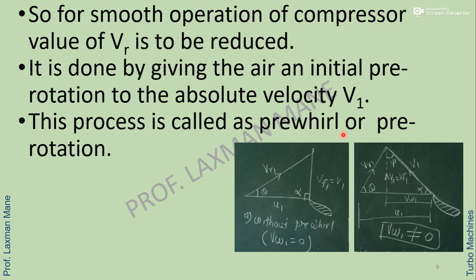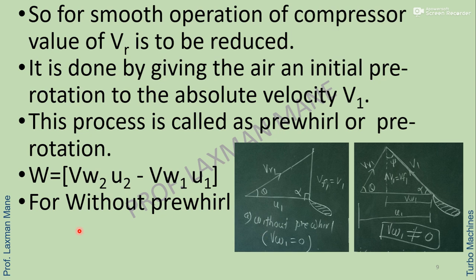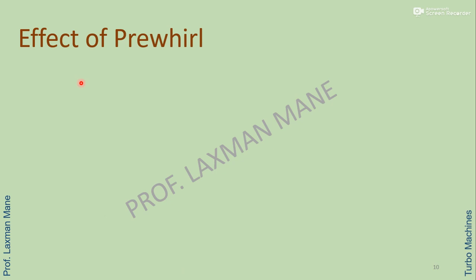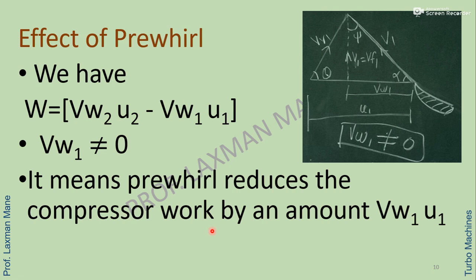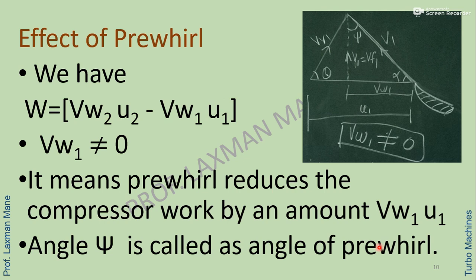This process is called pre-whirl or pre-rotation. For this case, work done = vw2 × u2 − vw1 × u1, because vw1 is not equal to zero. Without pre-whirl, vw1 = 0 and work = vw2 × u2. The effect of pre-whirl is that it reduces compressor work by an amount vw1 × u1. The angle psi in the diagram is called the angle of pre-whirl.